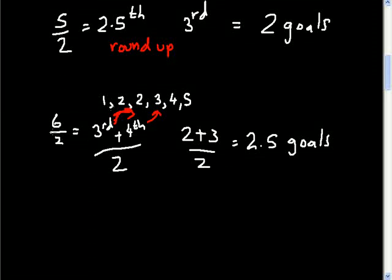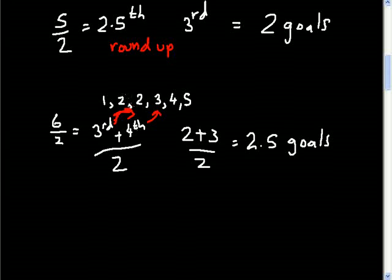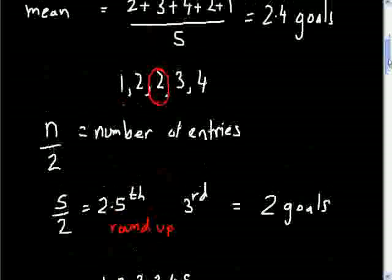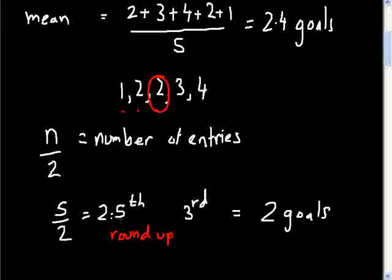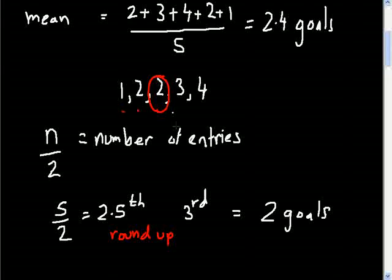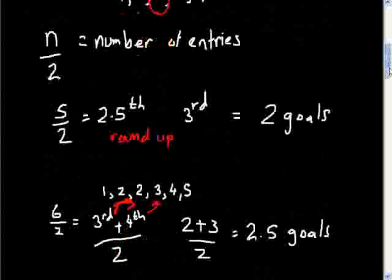So if you have an even number of entries, dividing by two gives a whole number, and you take that position plus the one above, find those two values, add them, and divide by two. If you have an odd number of entries, you'll get a decimal — round it up, and the value at that position is the median.